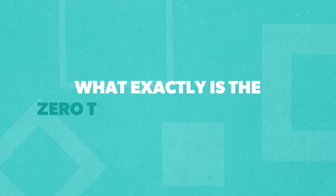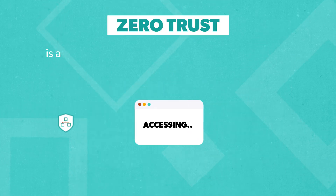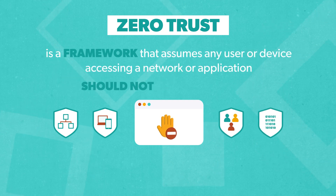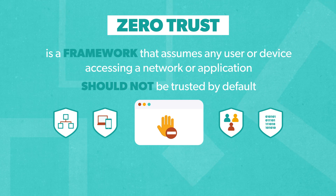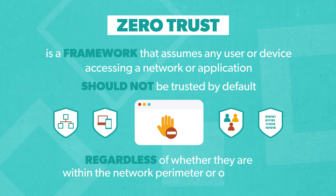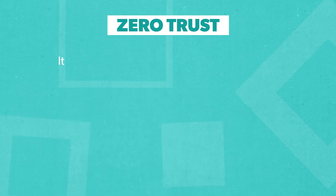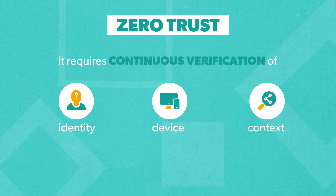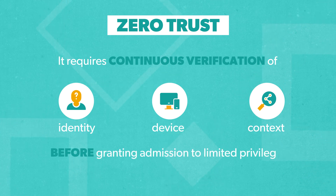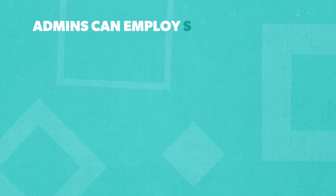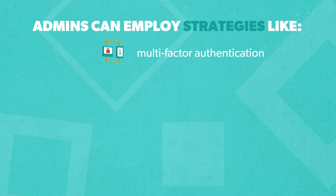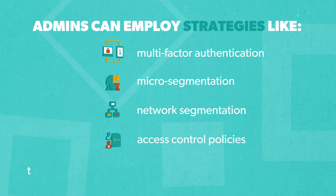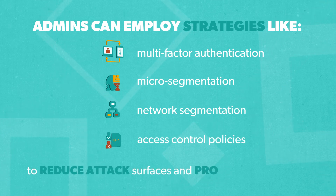So what exactly is the Zero Trust security model? Zero Trust is a framework that assumes any user or device accessing a network or application should not be trusted by default, regardless of whether they are within the network perimeter or outside of it. The Zero Trust security model requires continuous verification of identity, device, and context before granting admission to limited privileges. Admins can employ a combination of strategies like multi-factor authentication, micro-segmentation, network segmentation, and access control policies to reduce attack surfaces and protect digital assets.